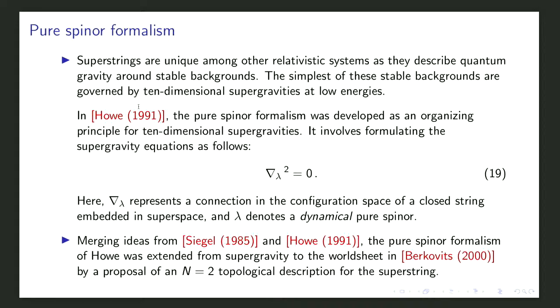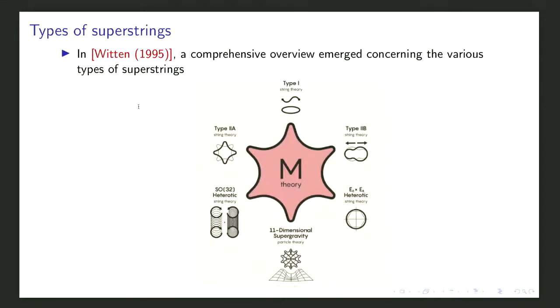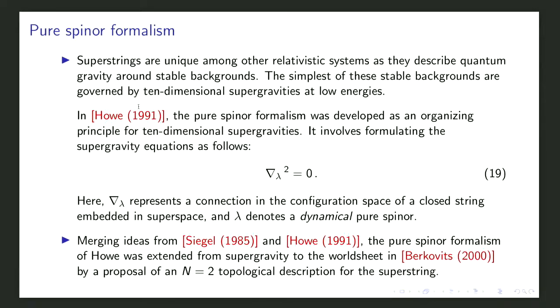These look like different corners, different perturbation theories of the same theory. Superstrings are unique among relativistic systems as they describe quantum gravity around stable backgrounds. The simplest stable backgrounds are governed by 10-dimensional supergravities at low energies, and these supergravities are what we use to name the types of strings. In 1991 the pure spinor formalism was developed as an organizing principle for 10-dimensional supergravities, formulating the supergravity equations as ∇λ = 0, where ∇ represents a connection in the configuration space of closed strings embedded in superspace and λ denotes a dynamical pure spinor.